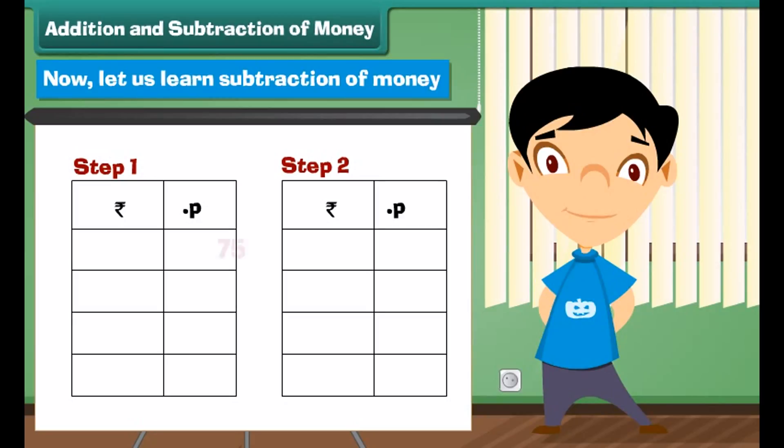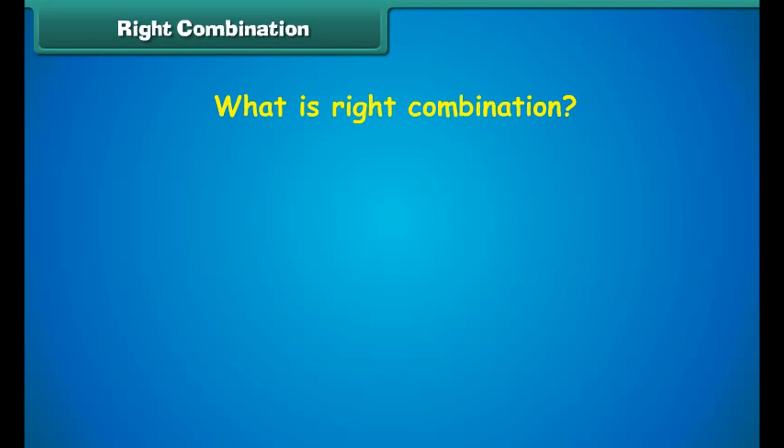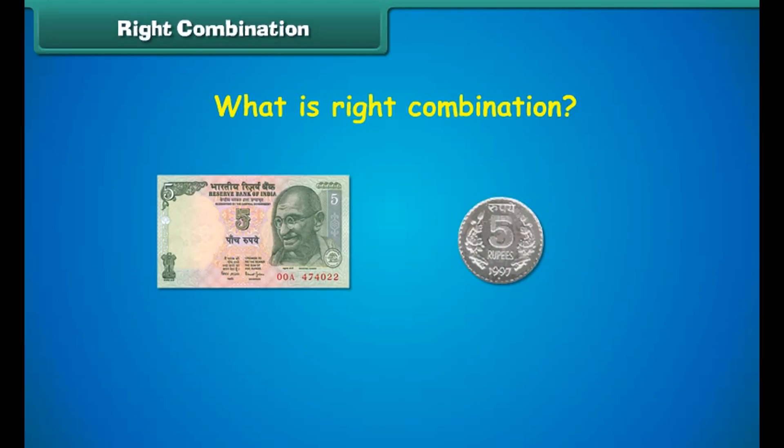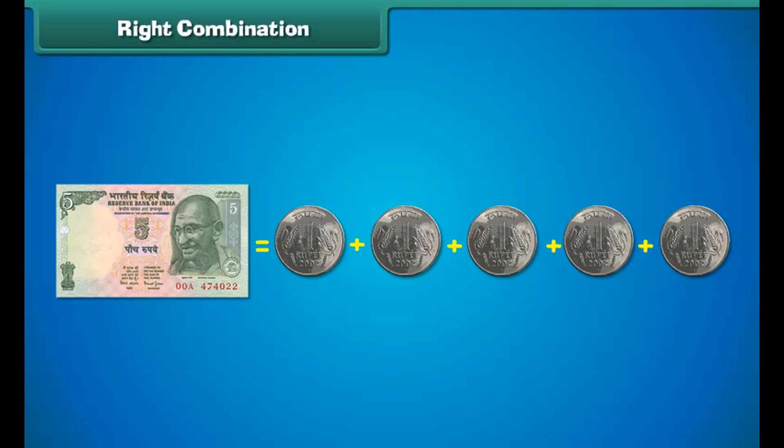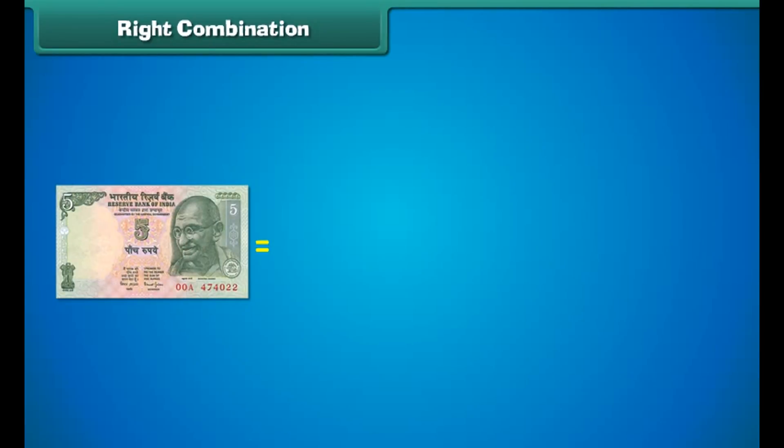Now let us learn subtraction of money. Subtract 10 rupees 50 paise from 40 rupees and 75 paise. Step 1: Subtract the numbers in the paise column. 75 minus 25 equals 50 paise. Step 2: Subtract the numbers in the rupees column. 40 minus 10 equals 30.